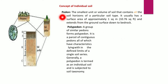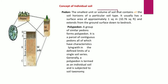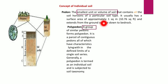The pedon is the concept of an individual soil. A pedon is the smallest unit or volume of soil that contains all the soil horizons of a particular soil type. It usually has a surface area of approximately one square meter and extends from the ground surface down to bedrock.